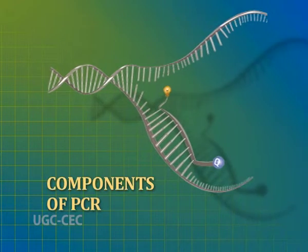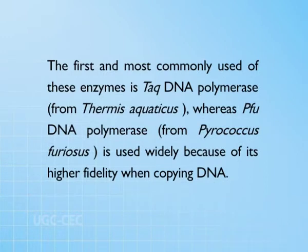In order to understand PCR, let us discuss about the components of PCR. First, the DNA template: the sample DNA that contains the target sequence is known as the template. Second, DNA polymerase: a type of enzyme that synthesizes new strands of DNA complementary to the target sequence. The first and most commonly used is Taq DNA polymerase from Thermus aquaticus, whereas Pfu DNA polymerase from Pyrococcus furiosus is used widely because of its higher fidelity when copying DNA. Both enzymes can generate new strands of DNA using a DNA template and primers, and both are heat resistant.